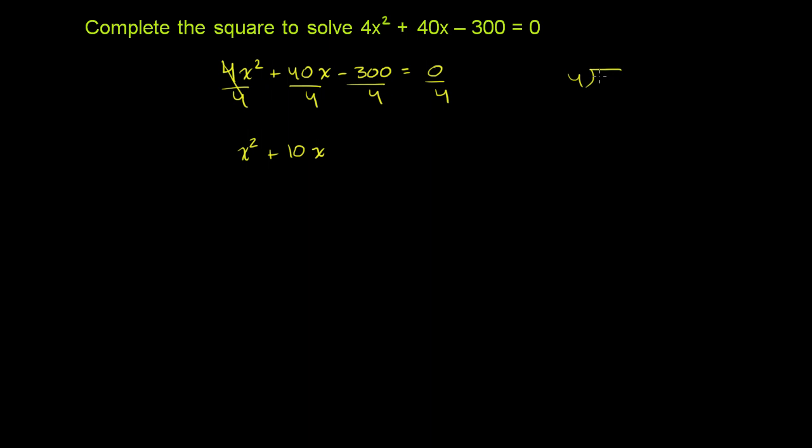Let me verify that. 4 goes into 30 7 times. 7 times 4 is 28. You subtract. You get a remainder of 2, bring down the 0. 4 goes into 20 5 times. 5 times 4 is 20. Subtract 0. So it goes 75 times. This is minus 75 is equal to 0.